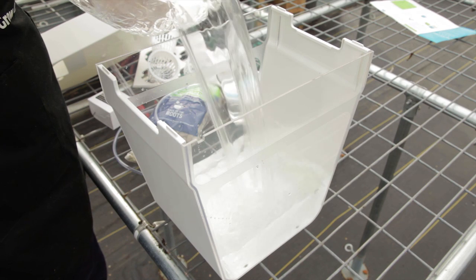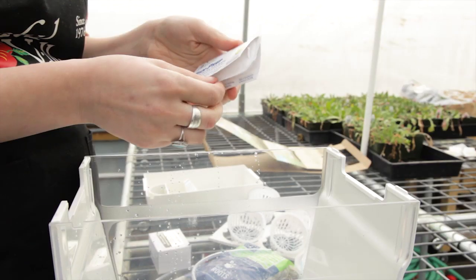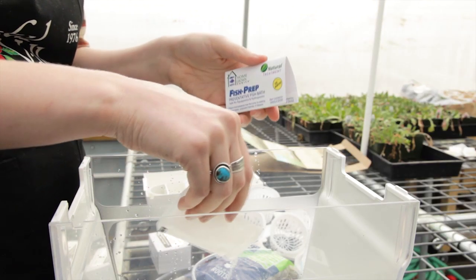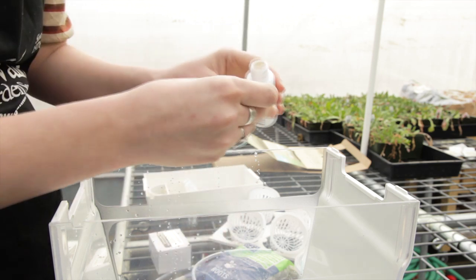Fill half of the tank with room temperature water. Tap water is okay. Add one pouch of fish prep and a quarter capful of D-chlor.